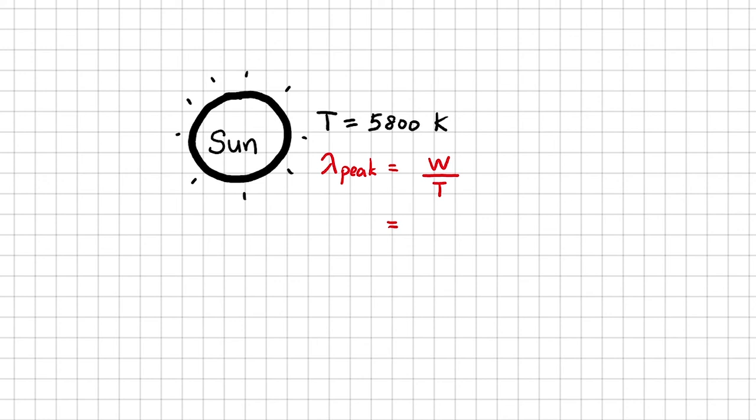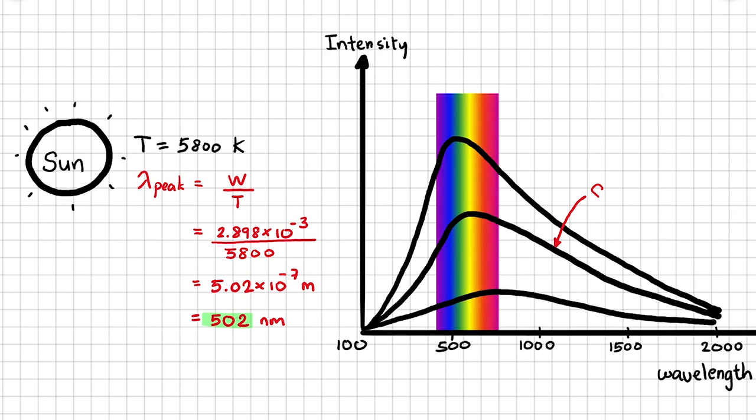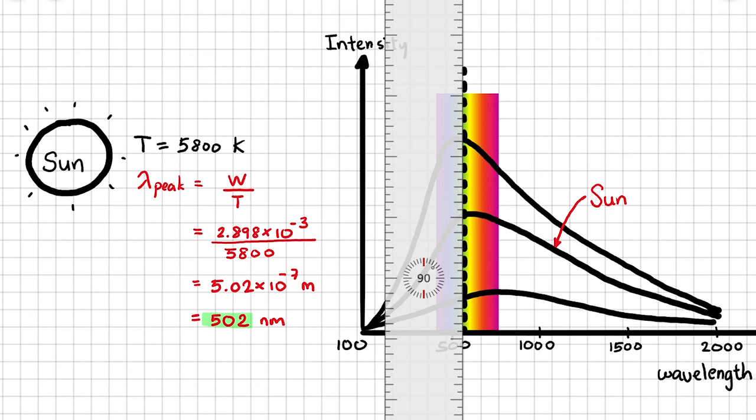Peak wavelength equals 2.898 times 10 to the power of minus 3 divided by 5800 Kelvin. That gives us 5.02 times 10 to the power of minus 7 meters, or 502 nanometers. That is green in the visible light spectrum, so our Sun emits most visible light in the green region.